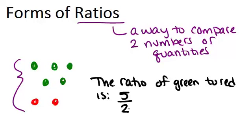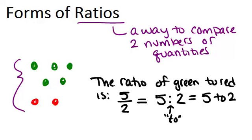Another way of writing a ratio besides as a fraction is with a colon like this. And when you read that you would read it as five to two. So the colon is read as to. The third way of writing a ratio is actually just to write it out and to write out five to two. So the ratio of green to red is five to two.